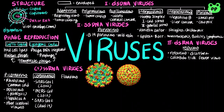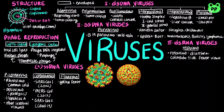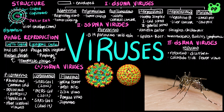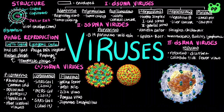Flaviviruses are enveloped viruses named from yellow fever virus — the word flavus means yellow in Latin. Most of these viruses are transmitted by the bite of an infected arthropod, either a mosquito or tick. Therefore, these viruses are classified as arboviruses, an acronym for arthropod-borne viruses. The West Nile virus, Zika virus, and dengue virus are all transmitted by mosquitoes and lead to fever. The Japanese encephalitis virus is also transmitted by mosquitoes and causes encephalitis, the inflammation of the brain, as well as hepatitis C virus, which is transmitted by contaminated blood.